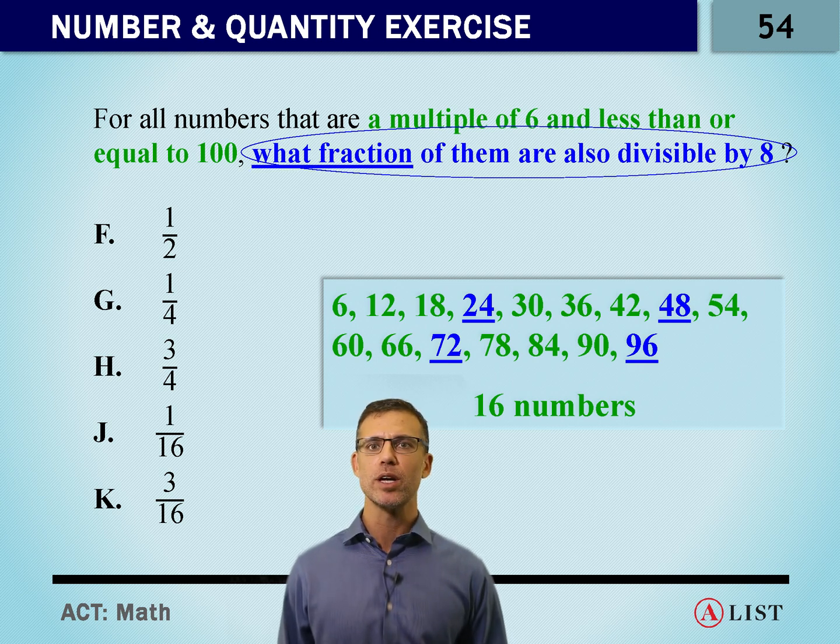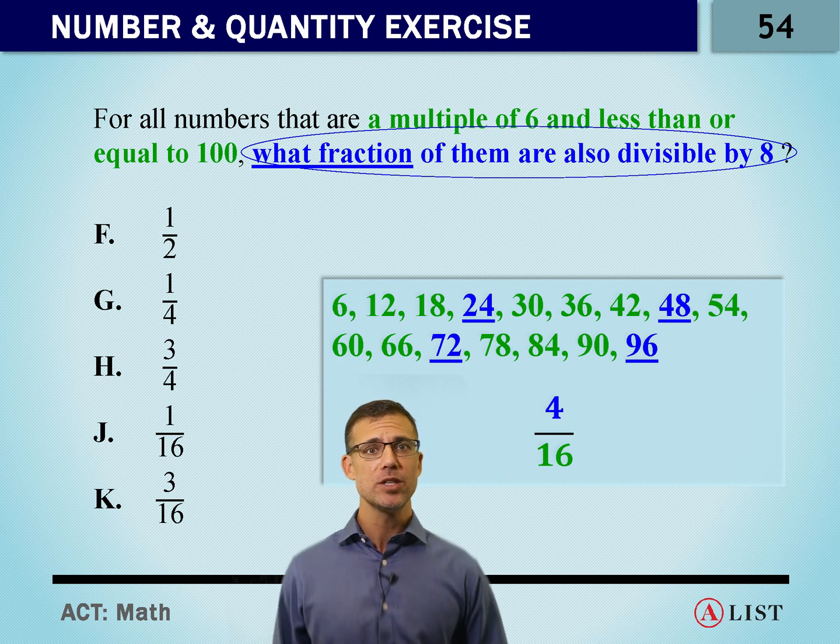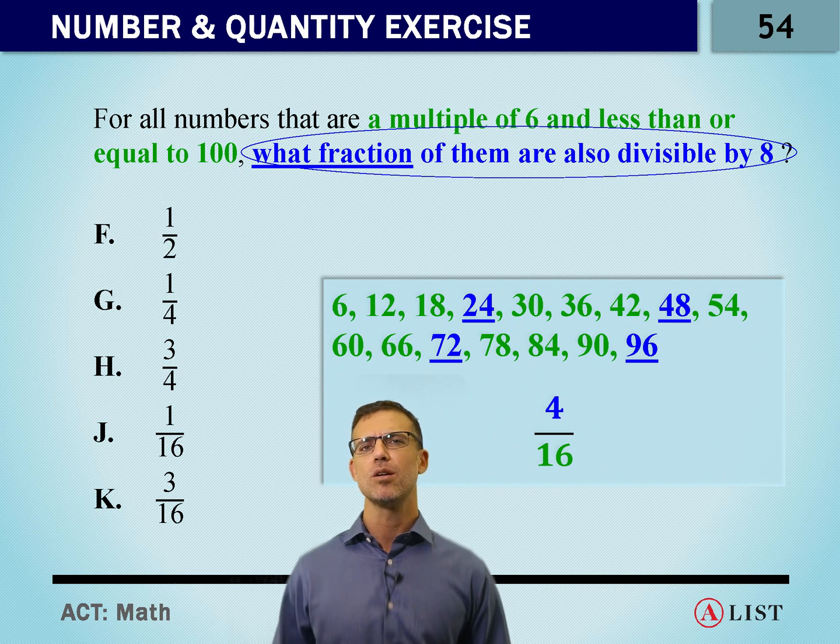So the fraction we're looking for is 4 out of 16. Don't be worried that you don't see 4 out of 16 as an answer choice though. Why? Because if we reduce 4 out of 16, we get 1 over 4. The answer is G.